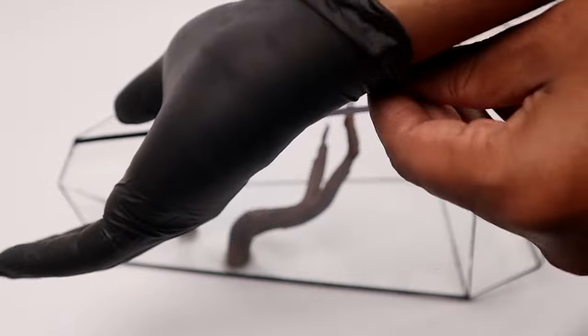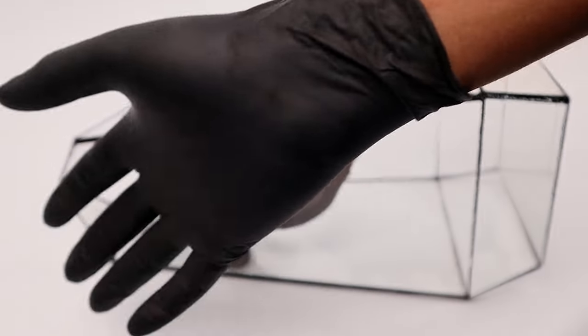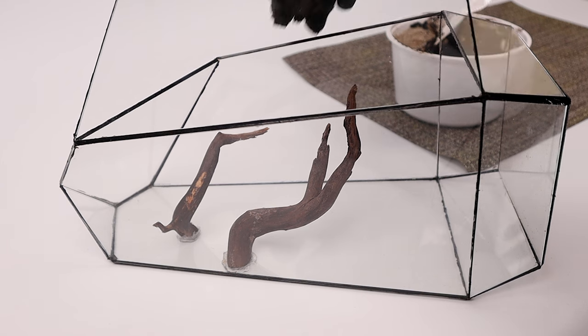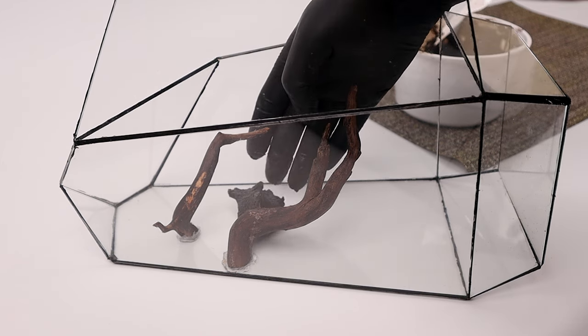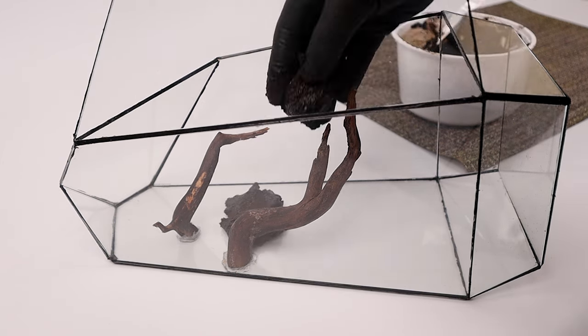The next part is going to be quite messy so I am wearing a glove for the job. I am applying the aqua soil paste to cover the back wall. I am creating a layer that will be about 1cm thick.